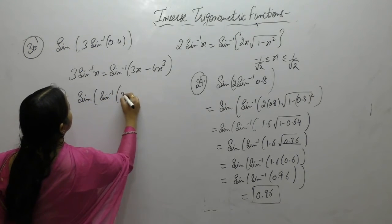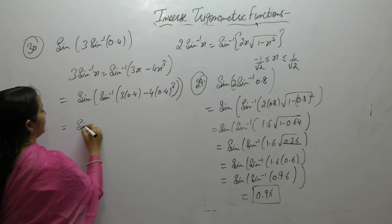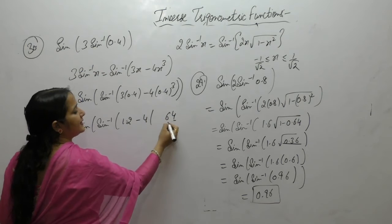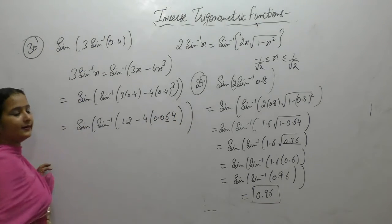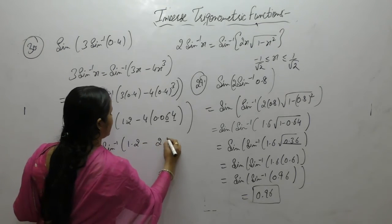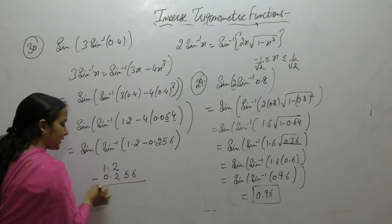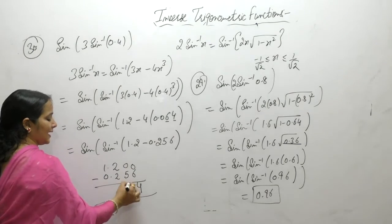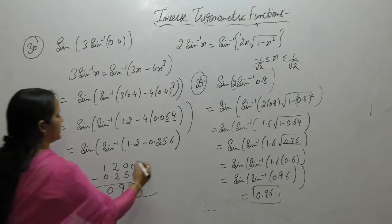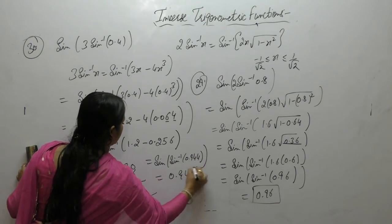So sin(sin⁻¹(3x - 4x³)): 4×3 = 12, so 1.2; 4³ = 64, decimal after 3 digits gives 0.064. Then 4×64 is 256, so 0.256. Computing 1.2 minus 0.256: 10-6=4, 9-5=4, borrow gives 11-2=9, so sin(sin⁻¹(0.944)). The answer is 0.944.